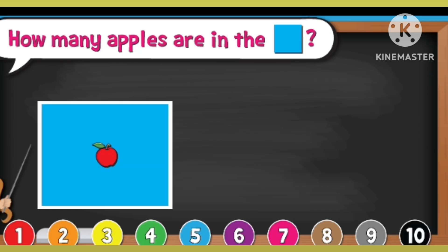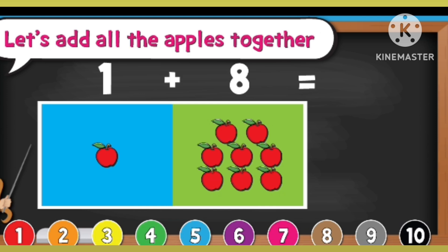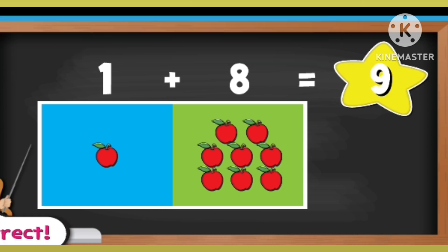How many apples are in the blue square? 1. How many apples are in the green square? 1, 2, 3, 4, 5, 6, 7, 8. Let's add all the apples together. 1 plus 8 equal to 9.